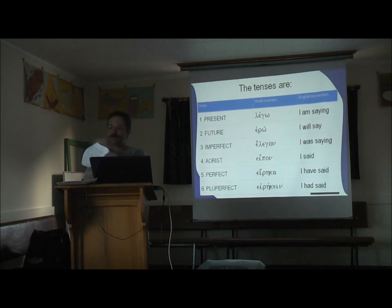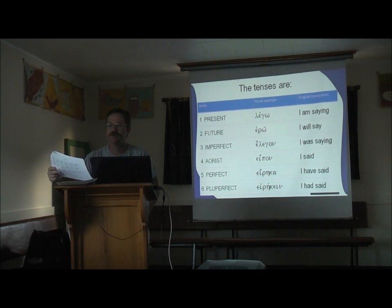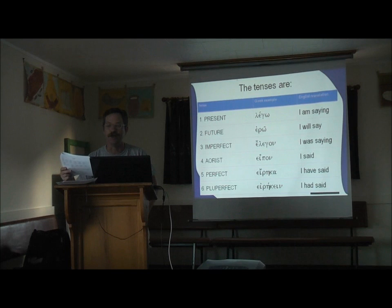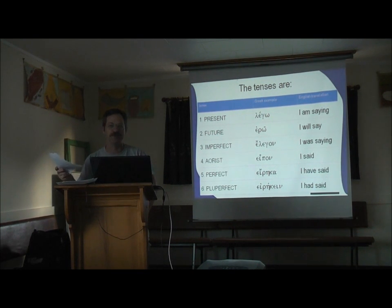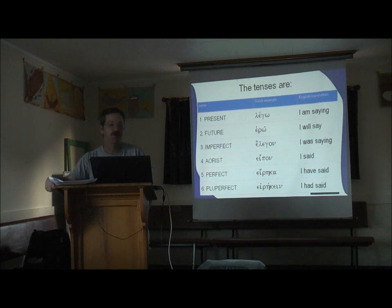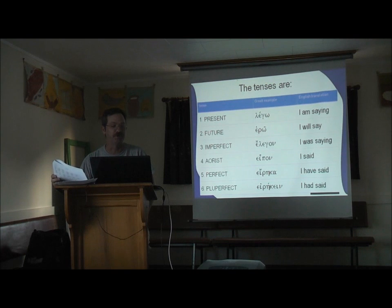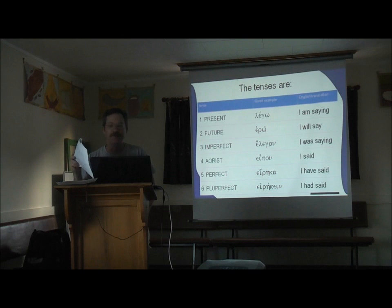Now look at chart seven, the imperfect tense. Notice I have an epsilon, and then a dash, and then the person and number suffix. Normally in the imperfect tense, you're going to see an augment, and then the stem, and then the person and number suffix.